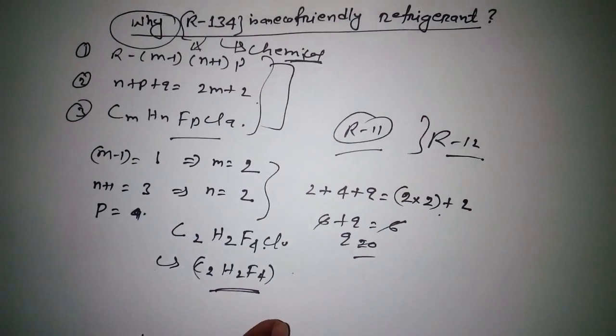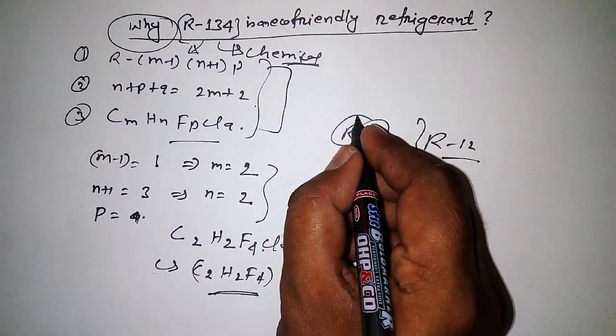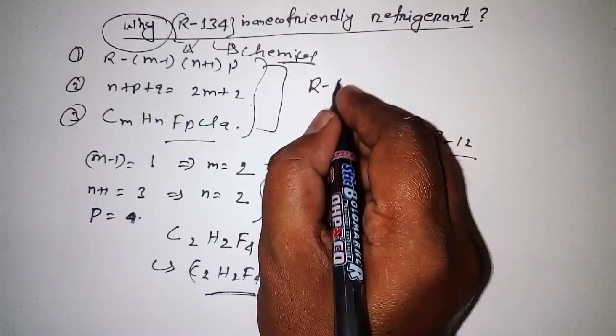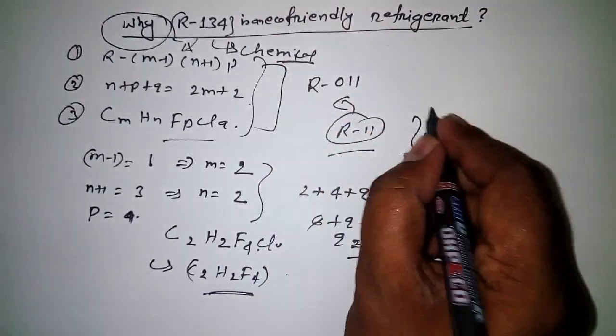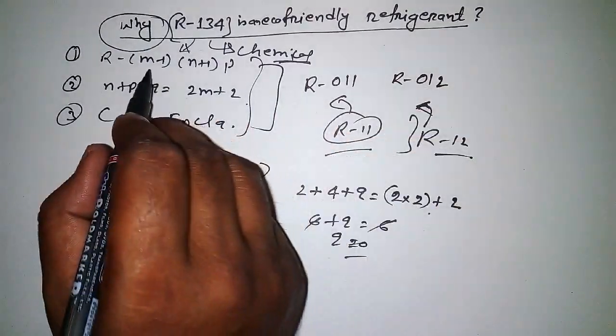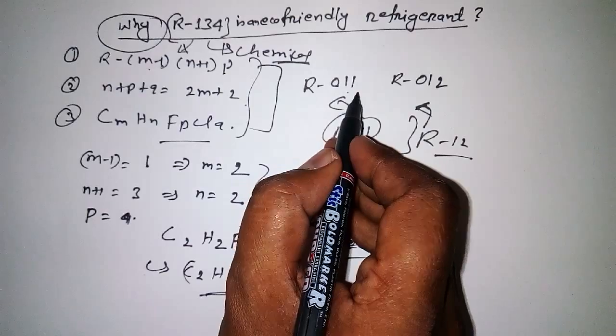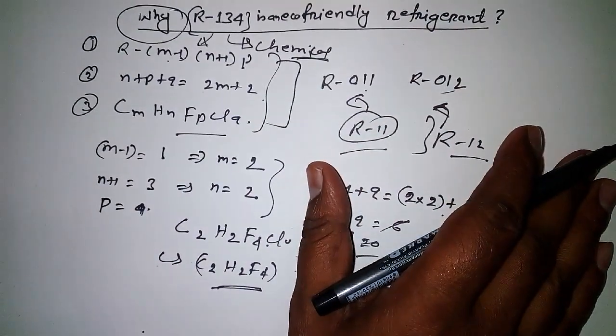Now what you need to do is practice calculating the chemical name for these refrigerants. For that, you have to write this one like R-011 and this one like R-012. That's why m minus 1 equals 0, n plus 1 equals 1, and p equals 1. Again for this case also it would be the same.